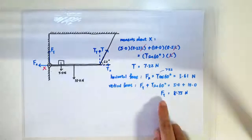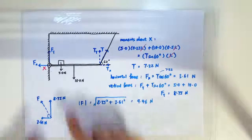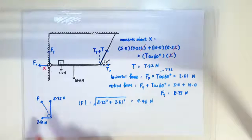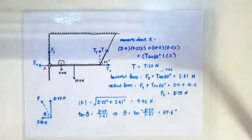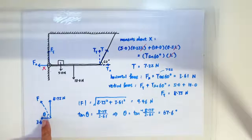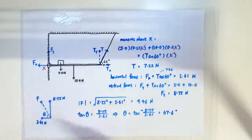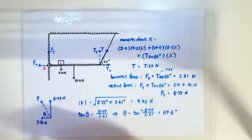So combining the vertical and horizontal components of the force at the hinge, we can solve for the magnitude of the hinge force using Pythagoras to be 9.46 newtons. As for the direction, it can be solved by a tangent ratio. So the force at the hinge turns out to be 67.6 degrees above the horizontal.